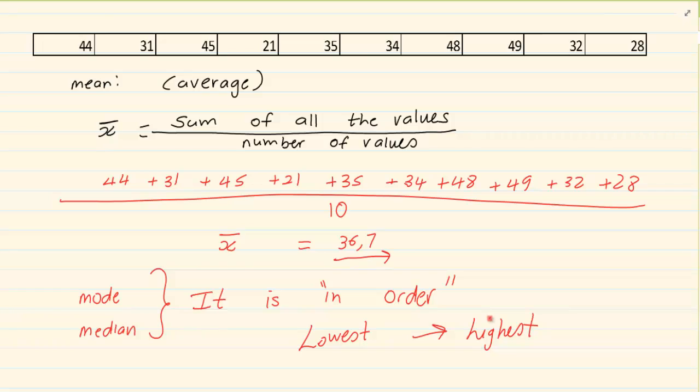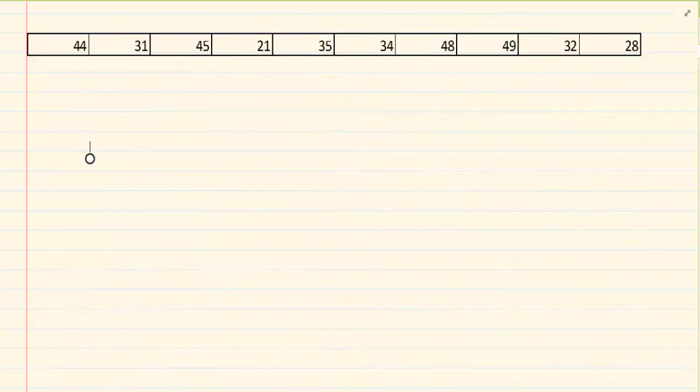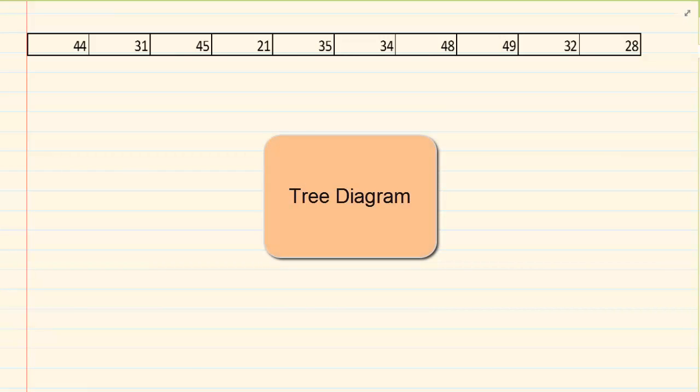If your data is not in order, then your mode and your median will be incorrect. How do we sort it out? How do we put it in order? You need to know how to do a stem-and-leaf diagram. Now the stem-and-leaf diagram, you had learned this in grade 6 or grade 7.